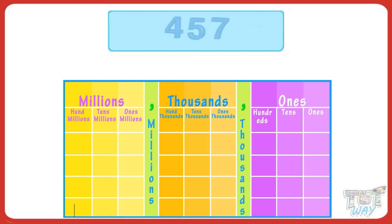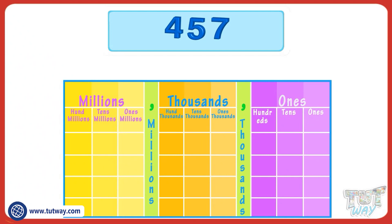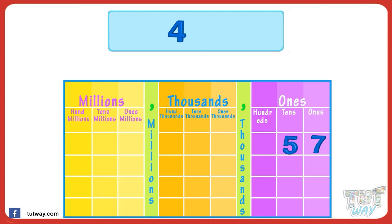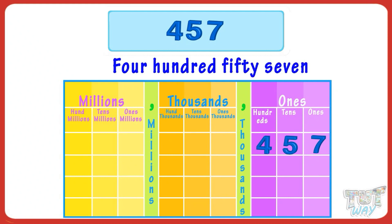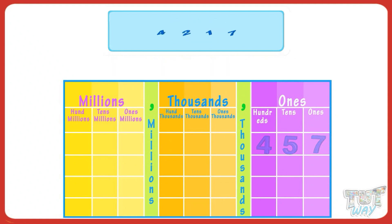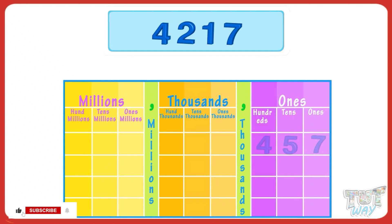Now let's start with a three digit number. Here we have the number 457. Write it in the place value chart starting from the ones digit: seven below ones place, five below tens place, four below hundreds place. The whole number is in the ones period, so no comma is needed. It will be written and read as four hundred and fifty seven.